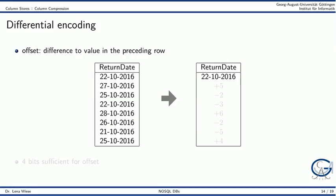As the last option we look at differential encoding. The values are now stored as offsets from the preceding row. We first store the original value of the first row. The difference between 22 and 27 is plus 5, between 27 and 25 is minus 2, between 25 and 22 is minus 3, and between 22 and 28 is plus 6.